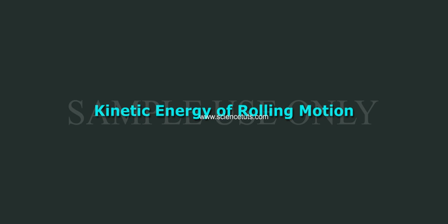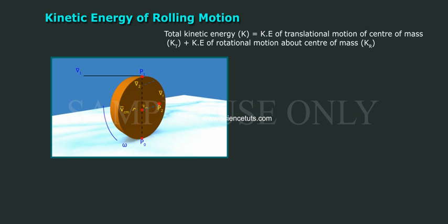Kinetic energy of rolling motion: Total kinetic energy K is equal to KE of translational motion of center of mass (K_T) plus KE of rotational motion about center of mass (K_R). That is, K = K_T + K_R (equation 1).